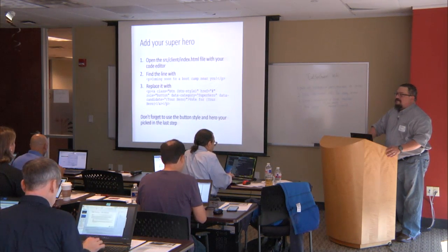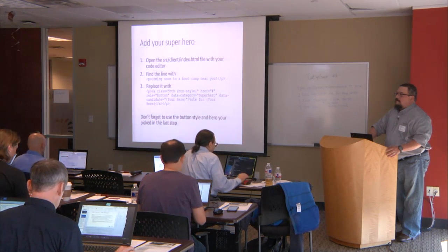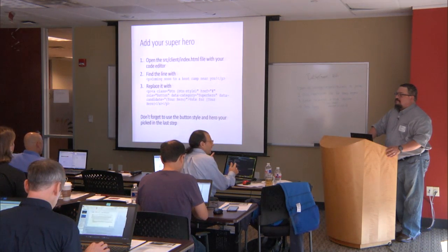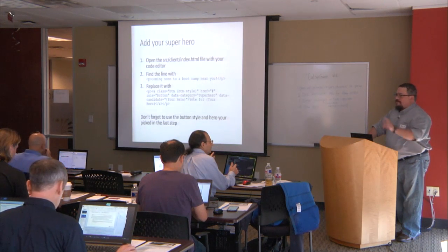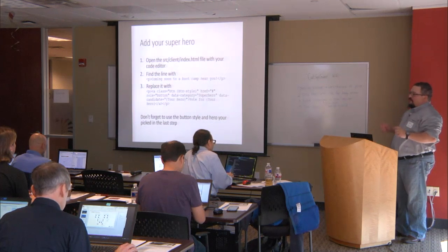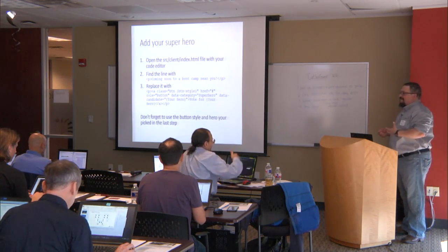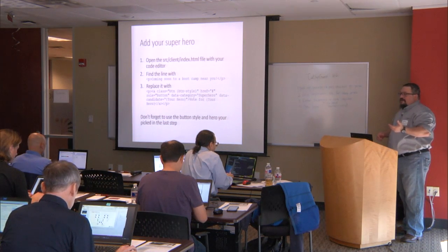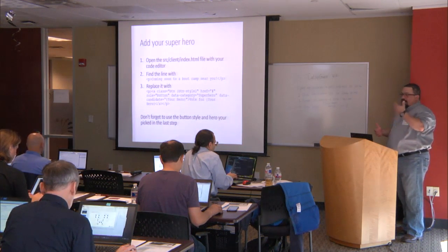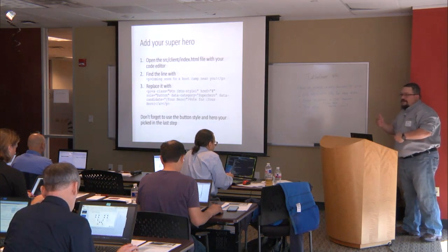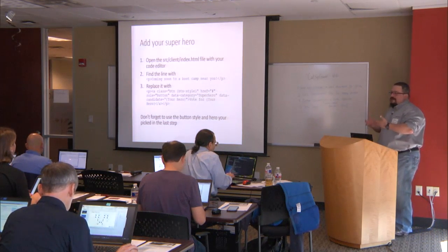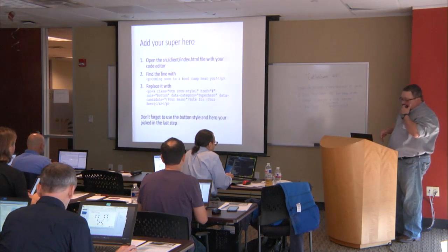What git actually does is it doesn't track files, it tracks edits. So instead of creating a new copy of that file in the history, it'll basically say 'on this line I deleted this and added this.' It tracks the incremental differences between each version. By saying git add dot, you're saying add all the changes to all the files in this repository and queue them up for a commit.